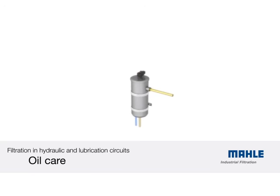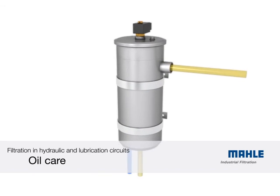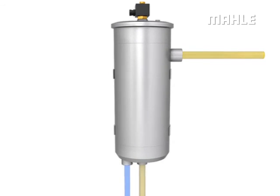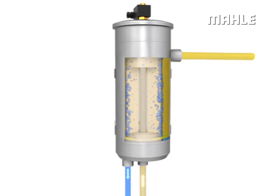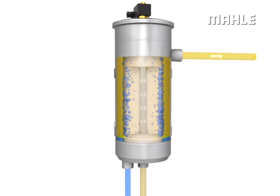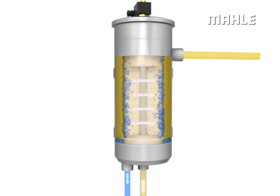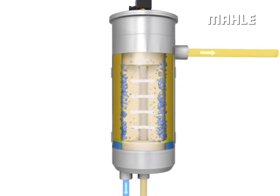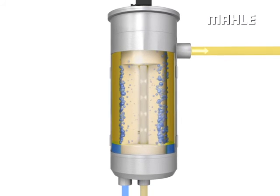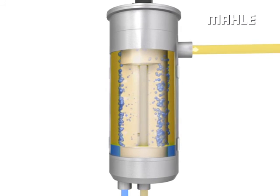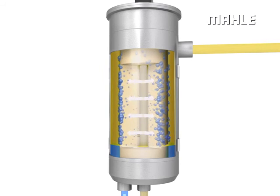Hydraulic systems can sustain heavy damage caused by the ingress of water. Mala offers a unique system for reliable removal of free water from oil. Through a specifically developed filter element, ultra-fine water droplets are coalesced and removed from the circuit.